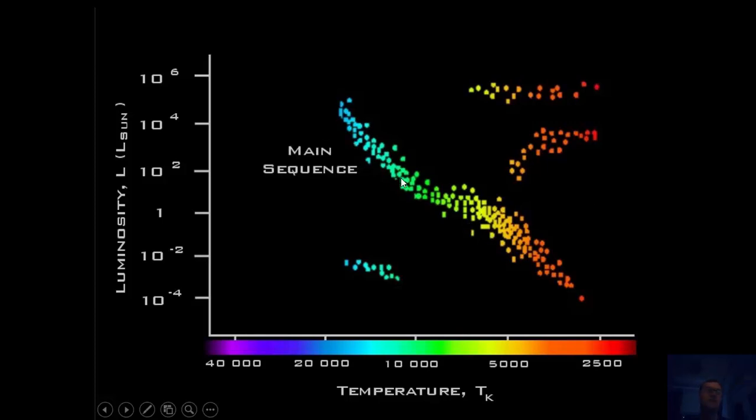First of all, we have the main sequence. The main sequence is this long strip of stars, and what it actually describes is a typical hydrogen-burning star. For most of a star's lifetime, it sits there burning hydrogen through a process of nuclear fusion, giving off lots of energy. We see here that the luminous stars are unsurprisingly the hottest stars. So that's the main sequence.